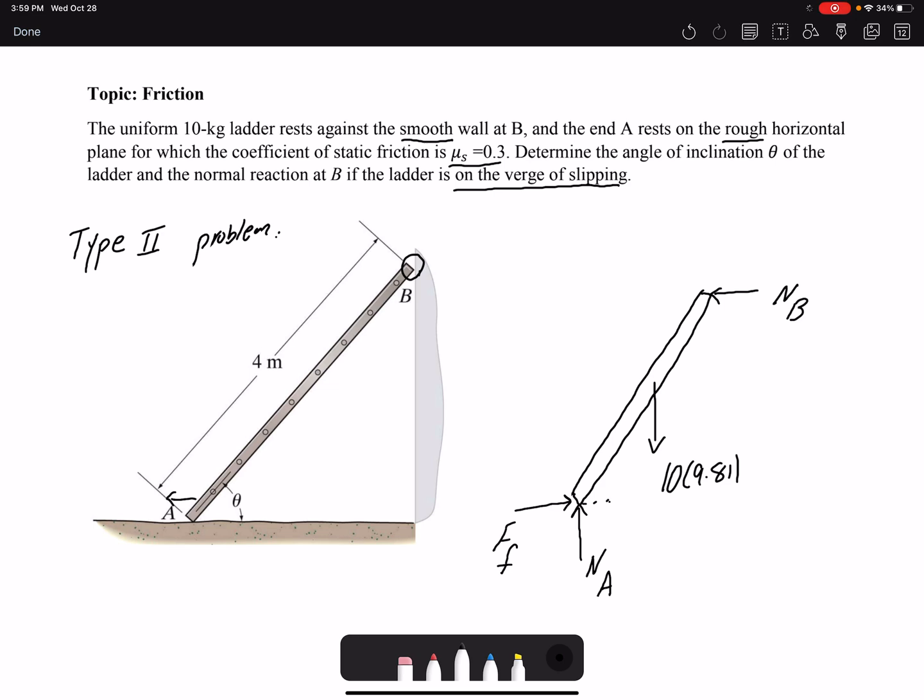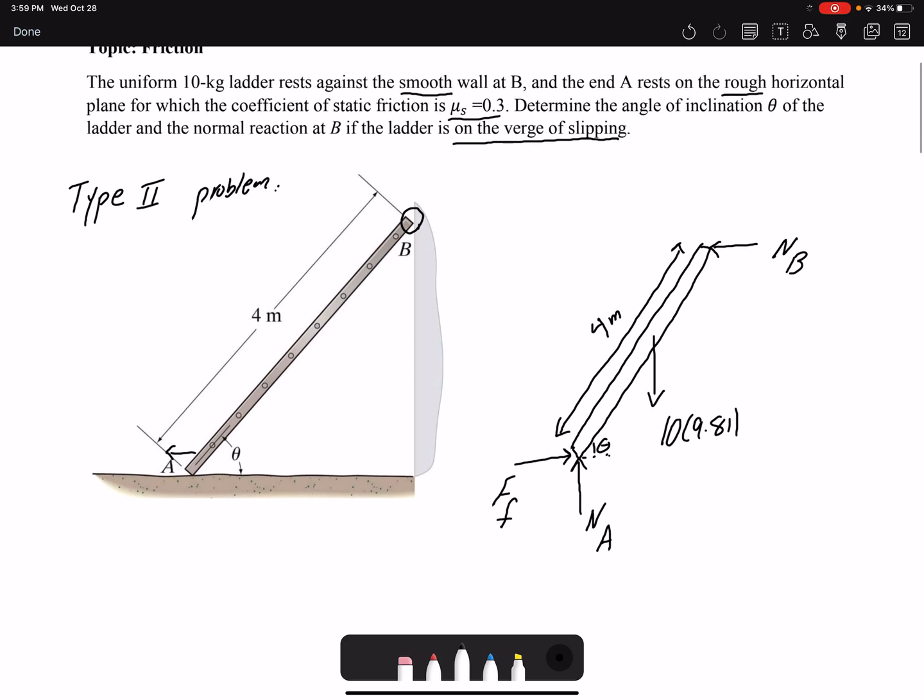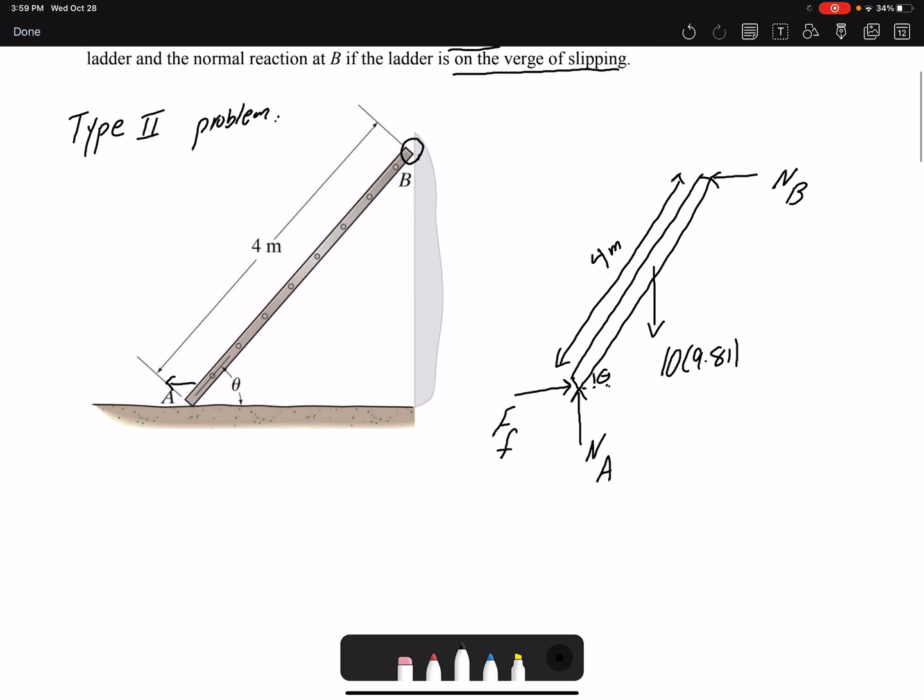Also I have the angle theta. The total length of the ladder is 4 meters, which comes into play when I write my moment equations. Listing our unknowns: Nb, Na, theta, and Fa—so I have four unknowns. Using equilibrium equations, I can only find three unknowns.